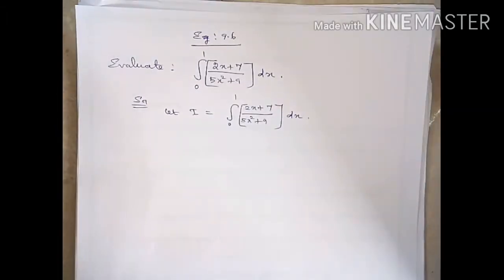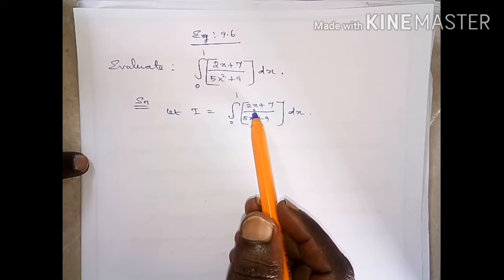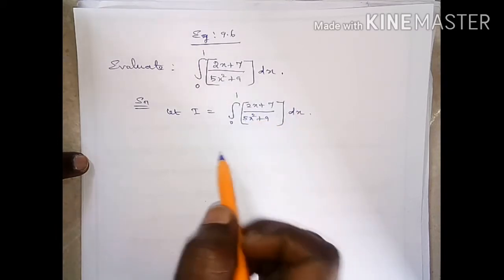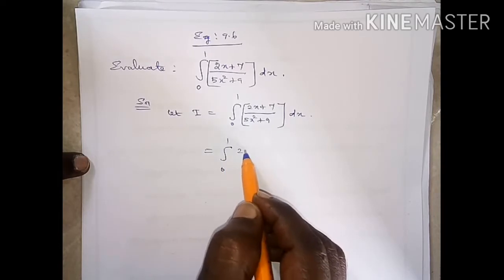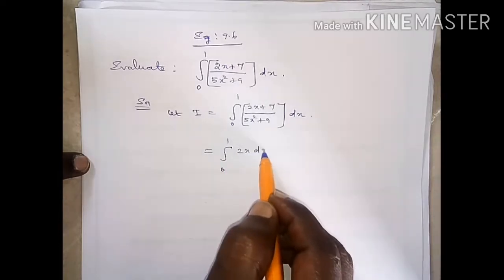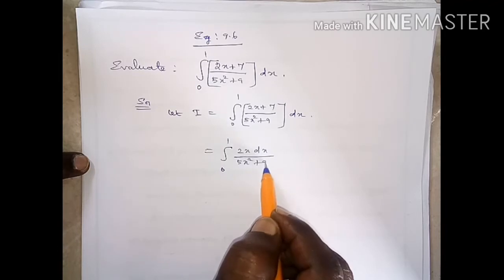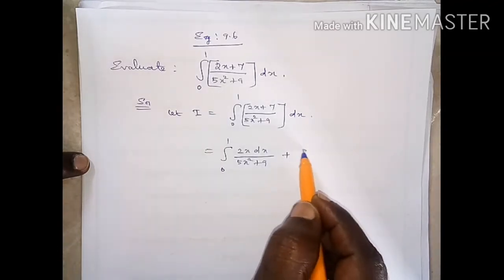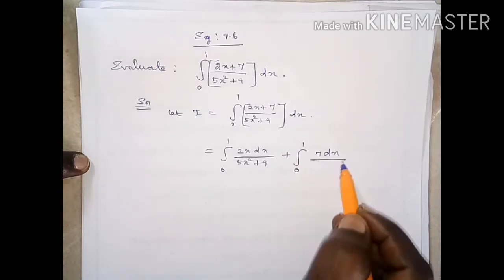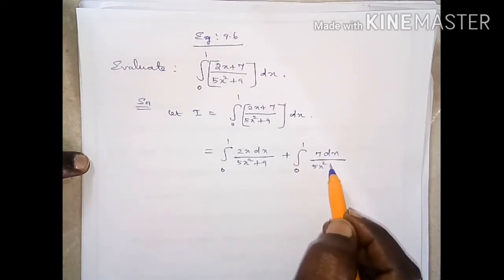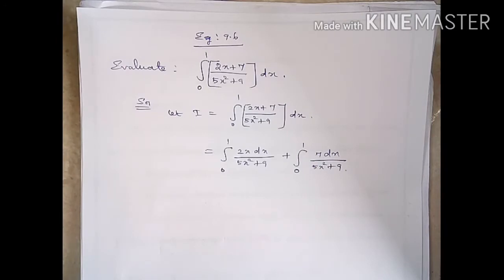First, we split the numerator into 2 terms. That is, integral from 0 to 1 of 2x dx divided by (5x squared plus 9), plus integral from 0 to 1 of 7 dx divided by (5x squared plus 9).